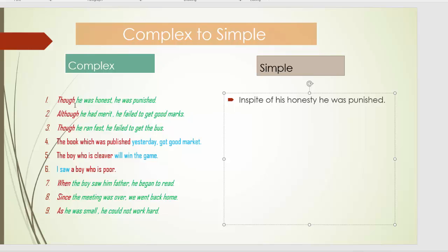If in a complex sentence we see 'though', we have to write 'in spite of' first. In this way, we can write the second sentence: 'Although he had merit, he failed to get good marks.' becomes 'In spite of his having merit, he failed to get good marks.' In the first sentence we say 'in spite of his being honest' — 'being' because there was 'was' in the sentence.